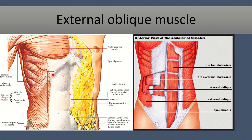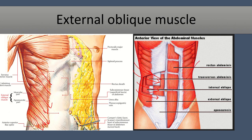The external oblique muscle — we can see the muscle fibers here. The muscle fiber lies somewhat obliquely and it lies most superficial of the wall muscles, so it is called the external oblique muscle. We can see in this picture the direction of the fiber, running like this, also from here — this is the external oblique muscle direction.